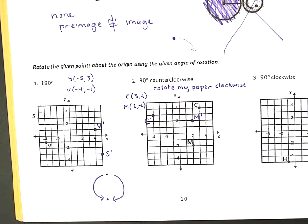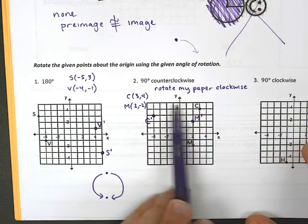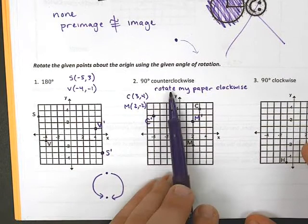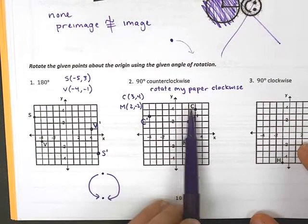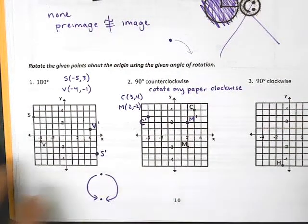What you'll notice here is this point now moved 90 degrees in a counterclockwise direction. So, I know that's goofy that you have to rotate your paper the opposite, but what it does is it ends up moving the point counterclockwise and that's what we wanted. So, let's try one more.